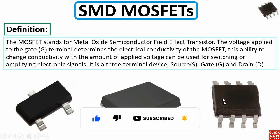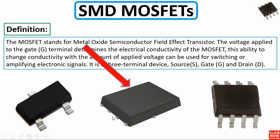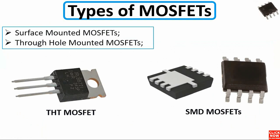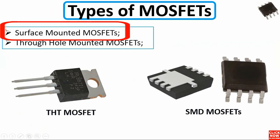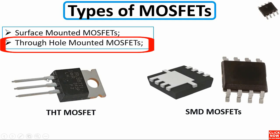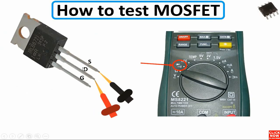There are basically three types of MOSFETs shown here. This is an 8-pin MOSFET, and here we also have an 8-pin MOSFET but this one is called a flat MOSFET. The flat MOSFET contains three pins for source, one pin for gate, and four pins for drain. We also have SMD MOSFETs or surface mounted MOSFETs on the right, and on the left we have THT MOSFETs or through-hole technology MOSFETs. The working principle for testing is the same for both.